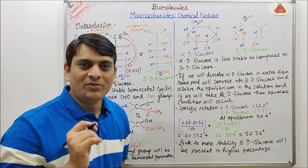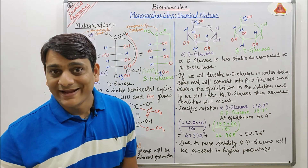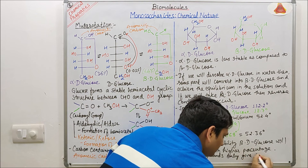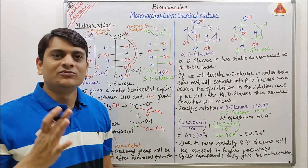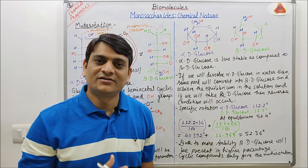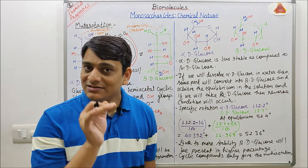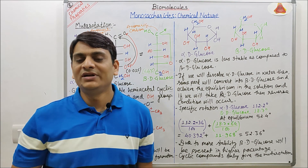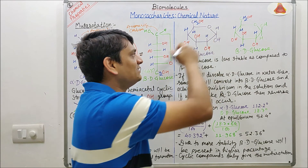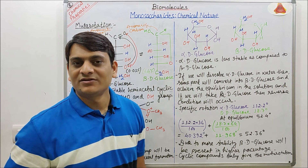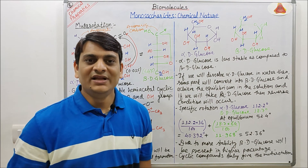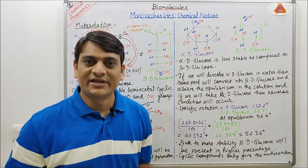This is the complete concept of mutarotation. Only compounds that are cyclic in nature will exhibit mutarotation. Other monosaccharides also form cyclic structures; for example, fructose forms a five-membered ring known as furanose, which contains four carbons and one oxygen. Glucose forms a six-membered ring known as pyranose, which contains five carbons and one oxygen. In my next video I will discuss other chemical properties of monosaccharides.